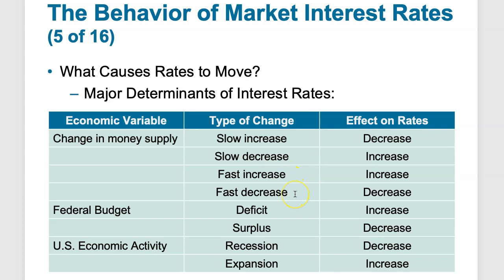A fast decrease in money supply — when the government acts quickly to reduce it, which the Fed can do by buying and selling treasuries — will decrease interest rates. The trick is that gradual changes produce one set of results while very fast changes produce another, usually causing an overreaction in the direction of the money supply change. These effects are the most common direction rates have moved, but it's not 100% definite.